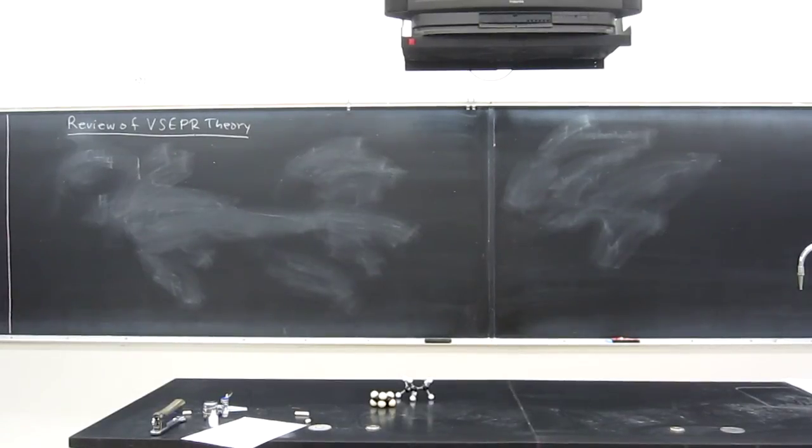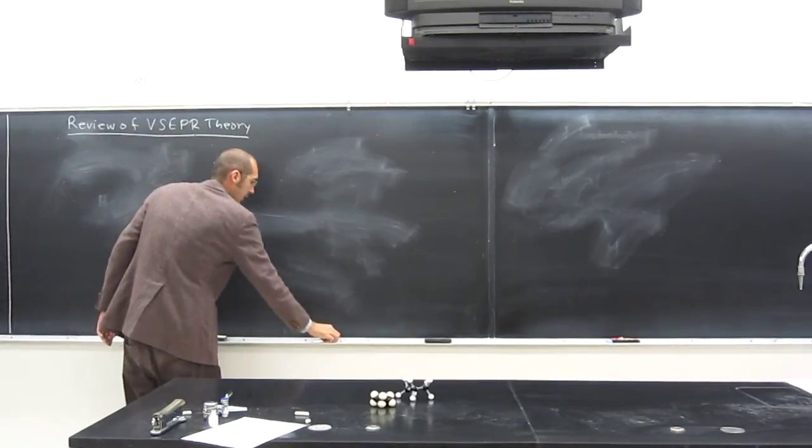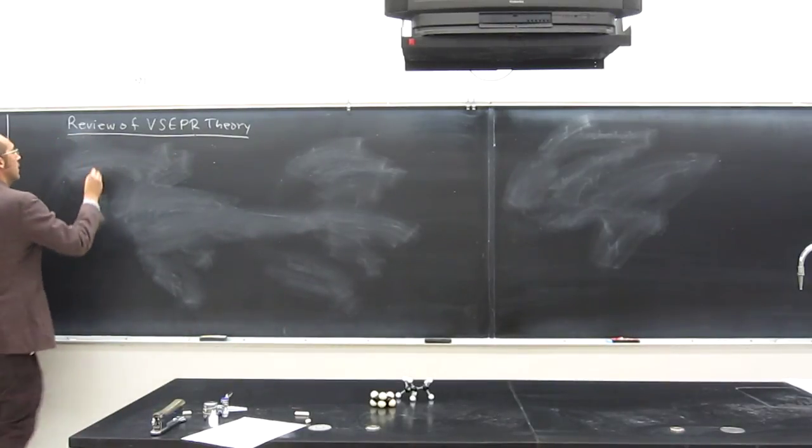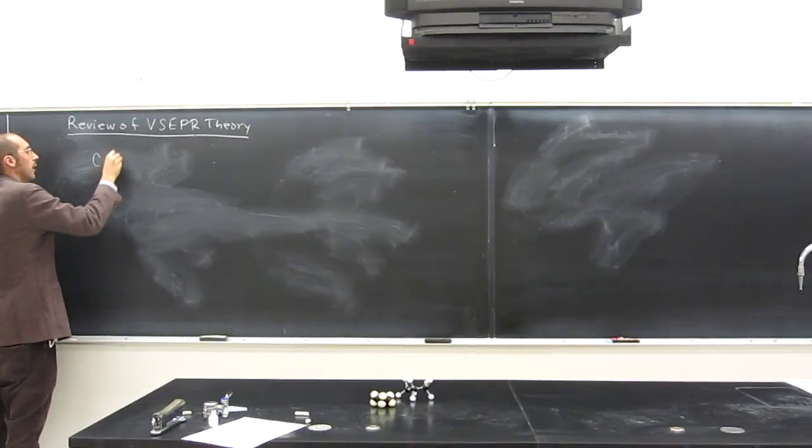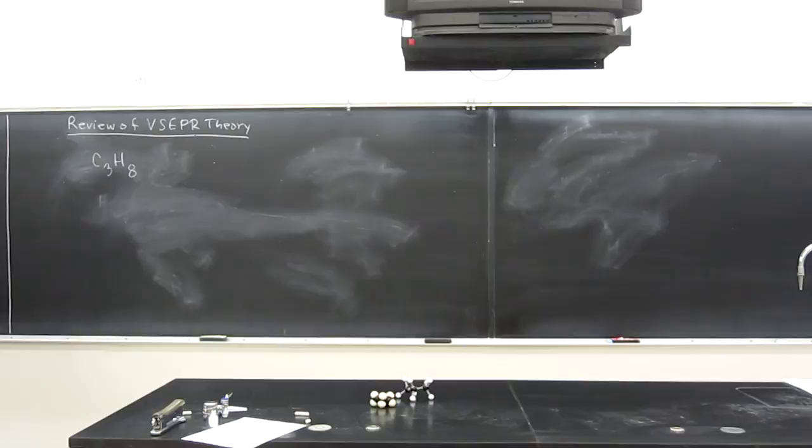Okay, so let's try a bigger structure. Let's try this one. So C3H8. This can only be built in one way. The name of this molecule is propane.